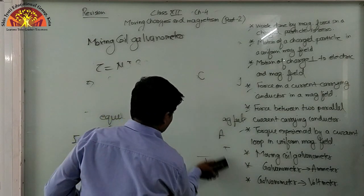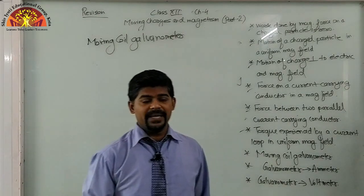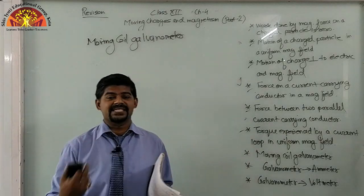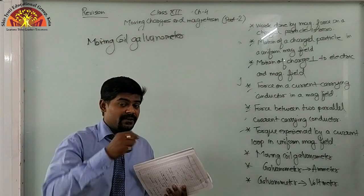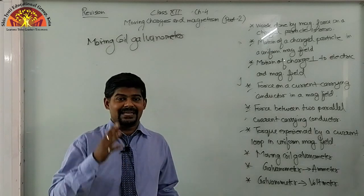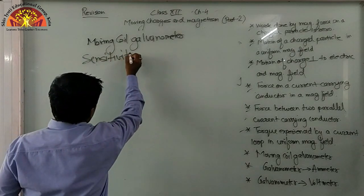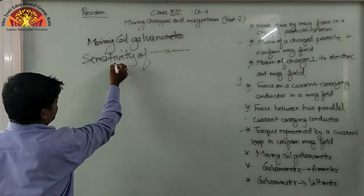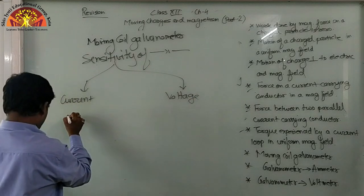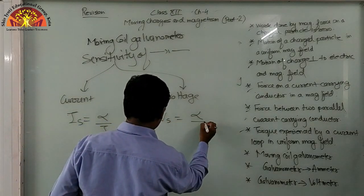If we talk about the sensitivity of a galvanometer — sensitivity means how much deflection we get for a minimum value of current. More deflection for less current means higher sensitivity; less deflection for more current means less sensitivity. There are two types: current sensitivity = alpha/I, and voltage sensitivity = alpha/V.